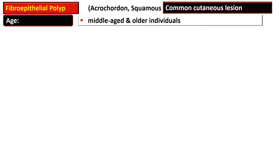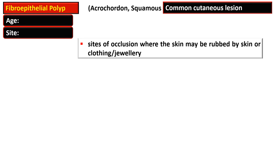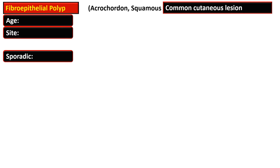They present in middle-aged or older individuals and are found on the neck, trunk, face, or intertriginous areas, especially at sites of occlusion where skin may be rubbed by skin, clothing, or jewelry. They are usually present on skin creases opposite to one another, and in such cases they are termed kissing lesions.